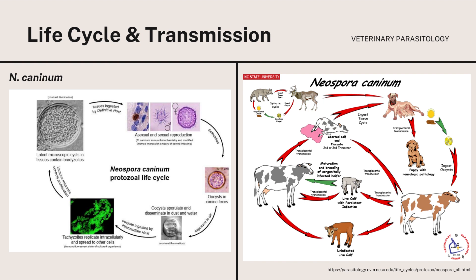A second route of transmission is the congenital transmission from mother to offspring. In cattle, Neospora caninum can be transmitted transplacentally from an infected cow to the developing fetus, an event that may occur in multiple pregnancies of the same cow. Because most congenital infections are subclinical, congenitally infected heifer calves may be retained and added to the breeding herd and in turn may pass infections transplacentally to their own offspring.